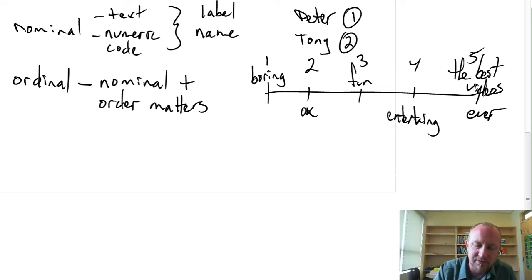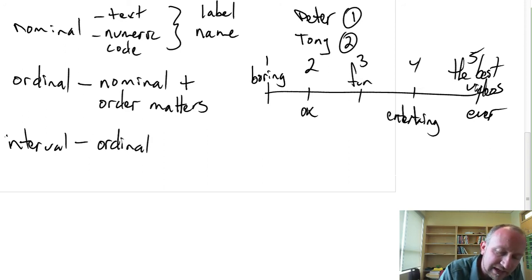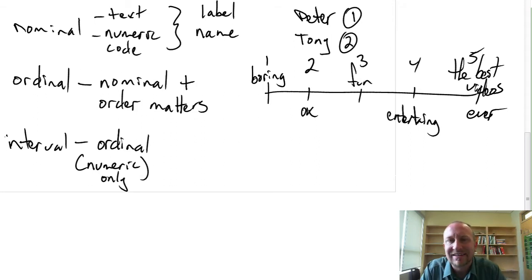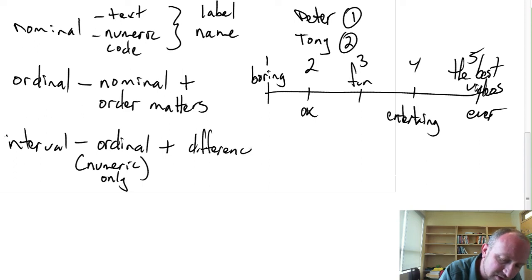Okay, the next type of variable, in terms of the amount of information that it contains, is an interval variable. So an interval variable, again, these all build upon each other. It contains all of the information of an ordinal variable, with the exception that it has to be numeric only. It can no longer have a text value in an interval, and the primary reason for that is the differentiating characteristic between an interval and an ordinal variable is that the interval variable now includes information in the difference. So now the difference between any two values matters and has a meaning all on its own.